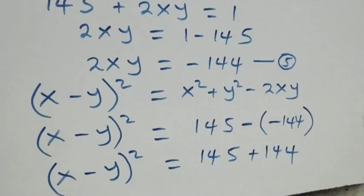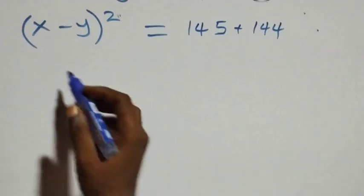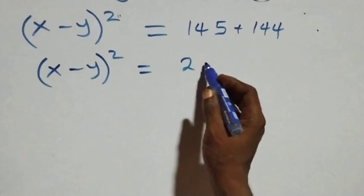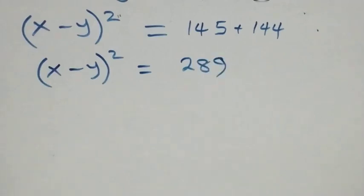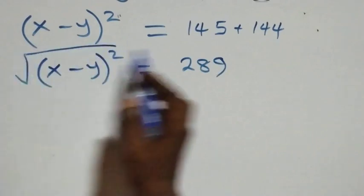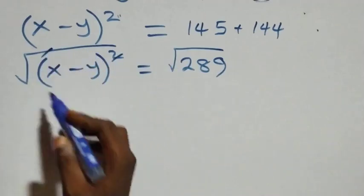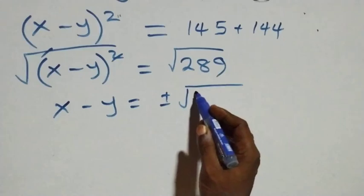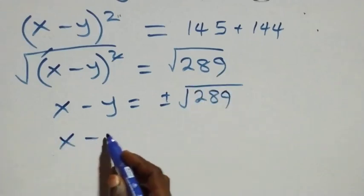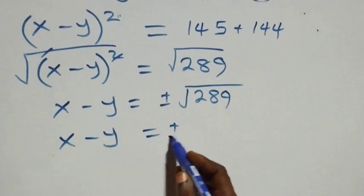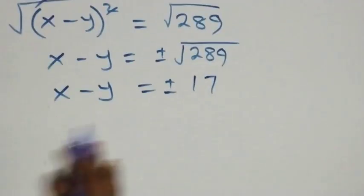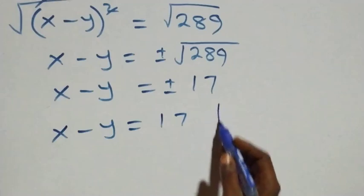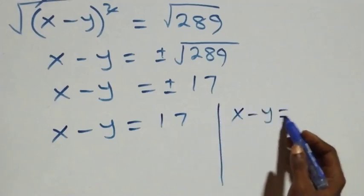So (x - y)² = 289. Taking the square root on both sides, x - y = ±√289 = ±17. This gives two cases: x - y = 17, or x - y = -17.